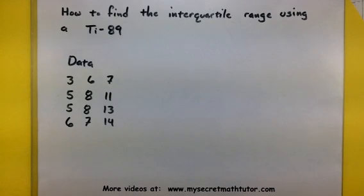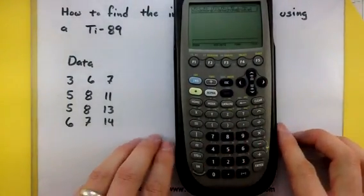Remember that the Q3 is basically the upper median of our data, and Q1 is the lower median of all of our data. So let's go ahead and grab our calculators and see how this process plays out.